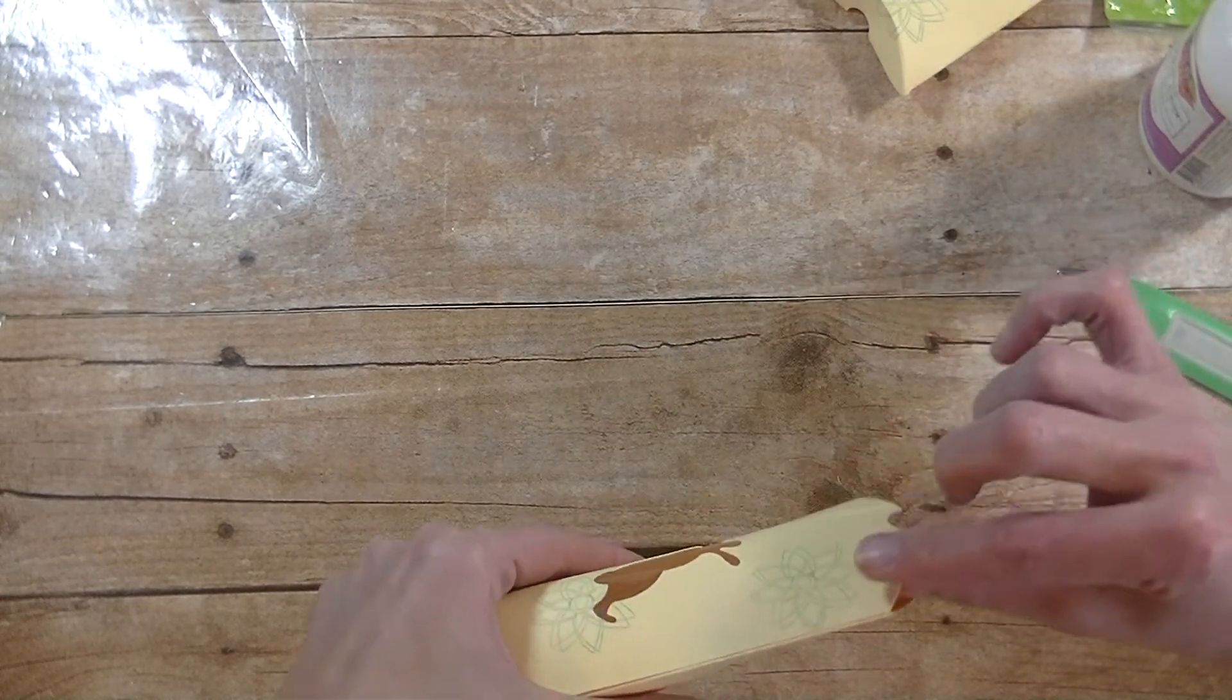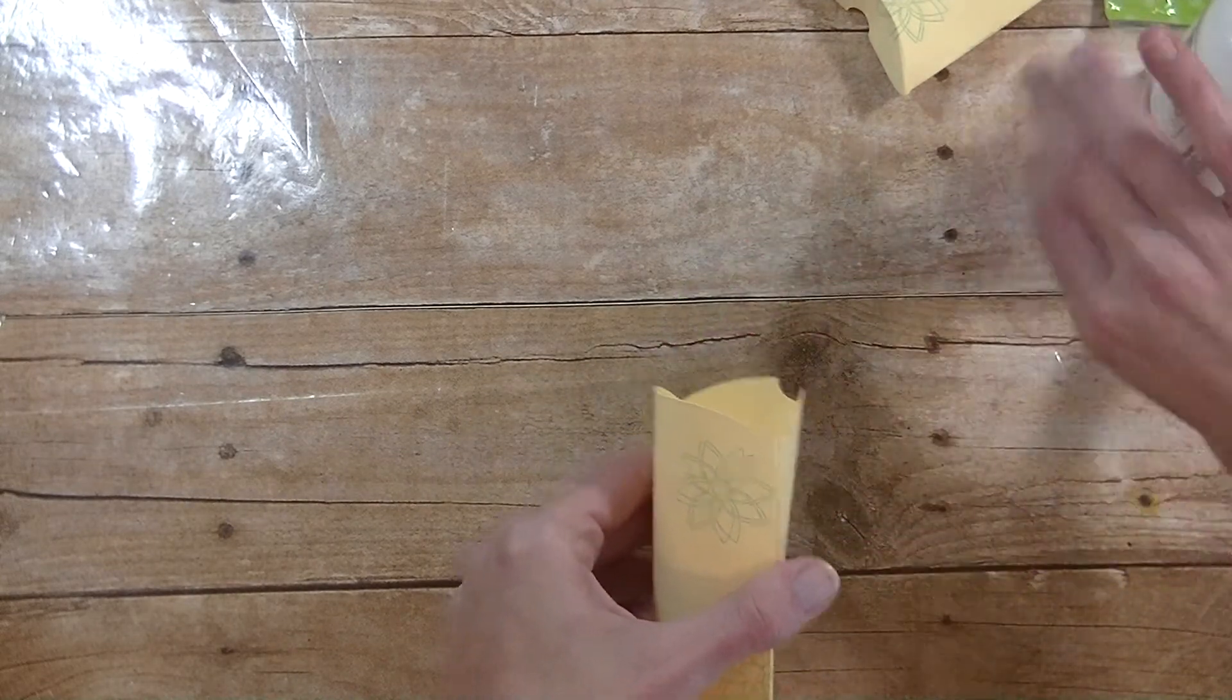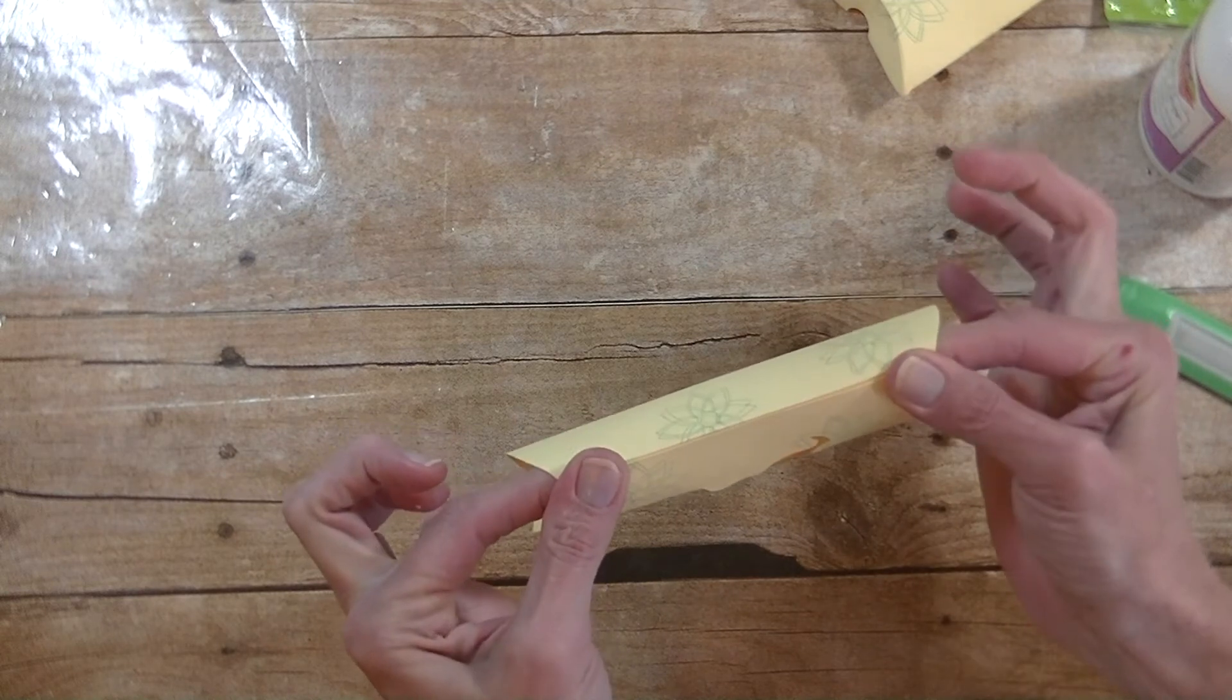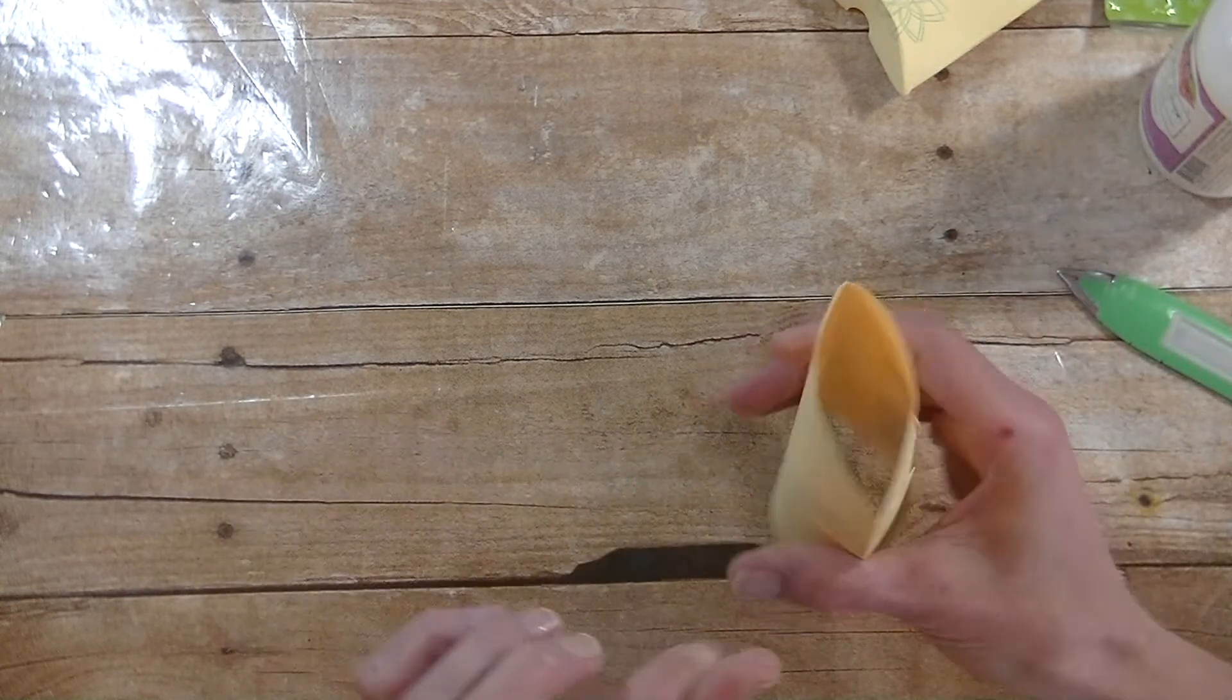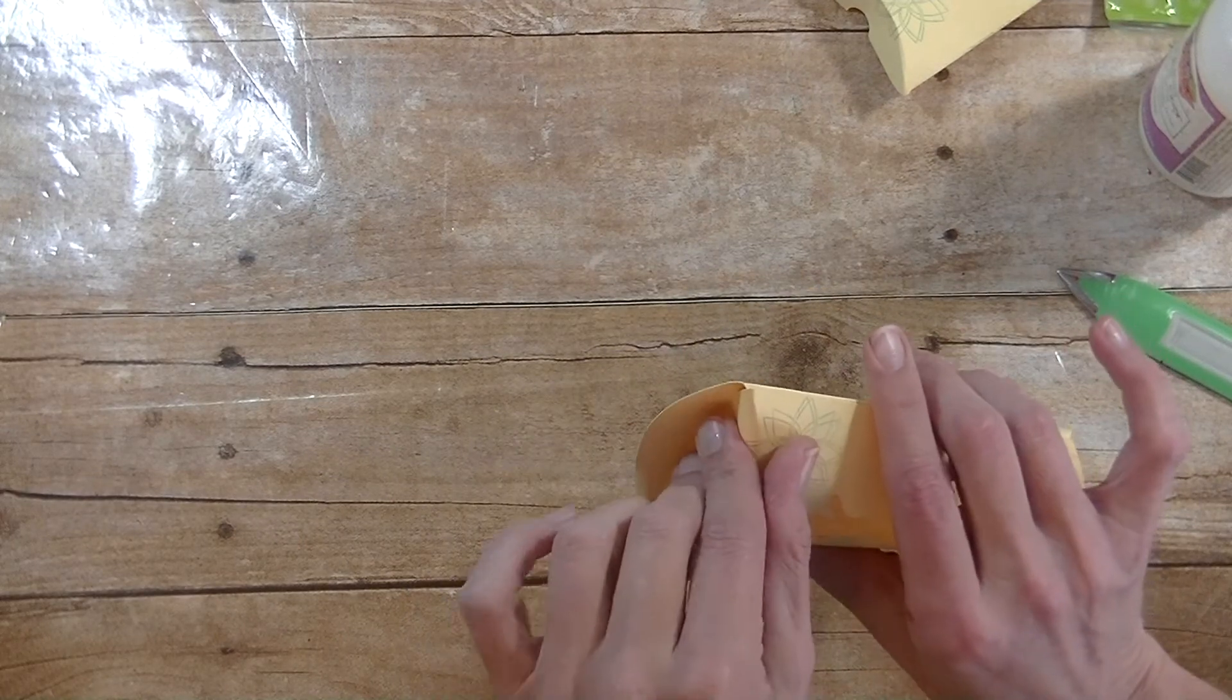Now just double check on your seam here on the ends. Make sure the glue is all the way to the end right there, because that's where we're going to put a lot of pressure on our box. I'm going to just go ahead and give the ends there a really good squeeze.